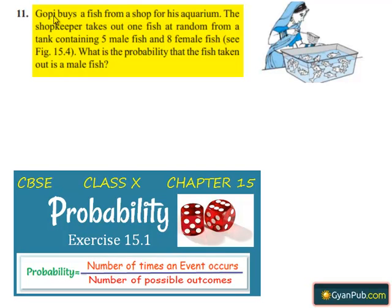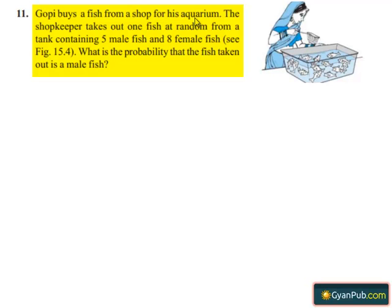Coming to the 11th question, Gopi buys a fish from a shop for his aquarium. The shopkeeper takes out one fish at random from a tank containing 5 male fish and 8 female fish. What is the probability that the fish taken out is a male fish?